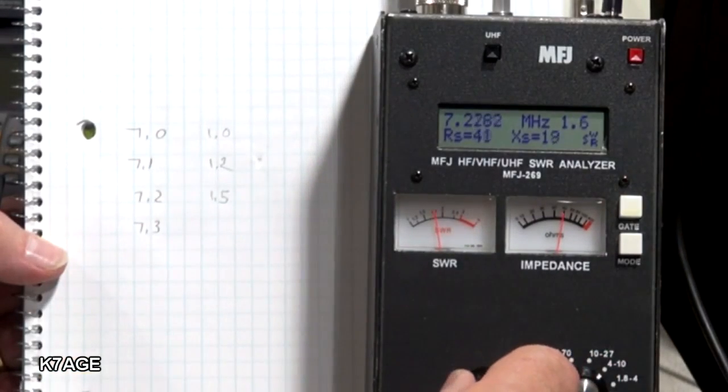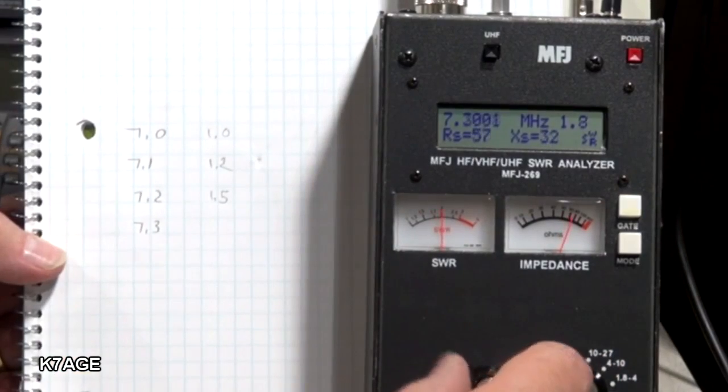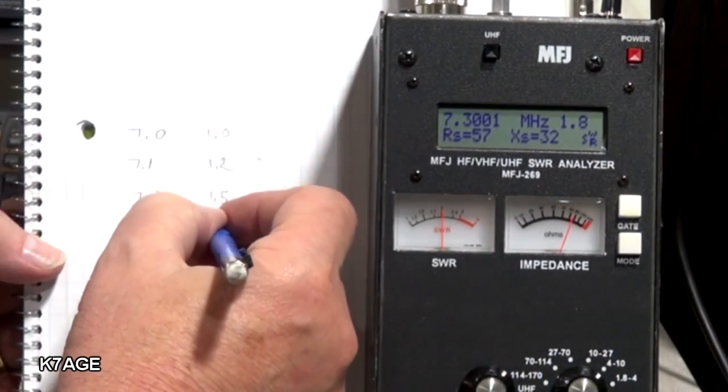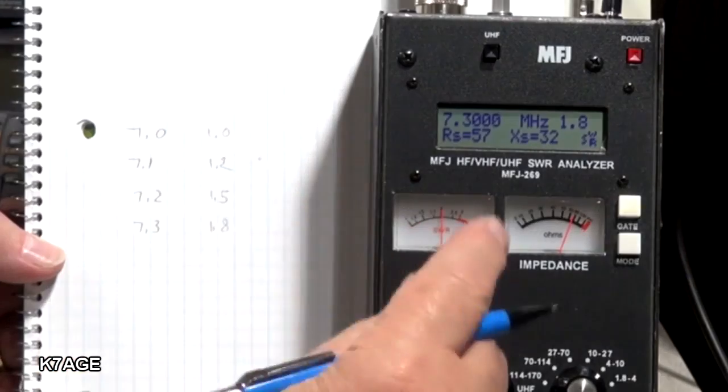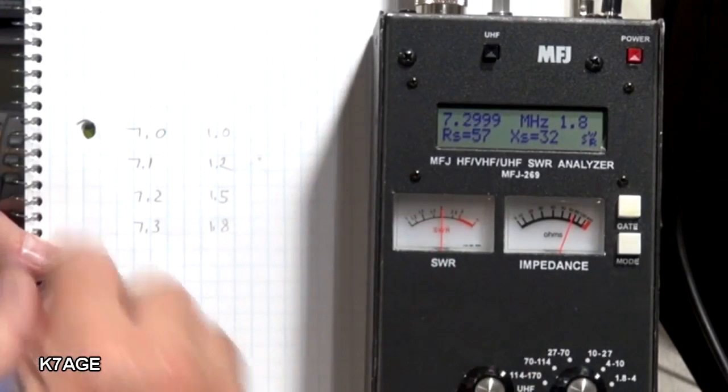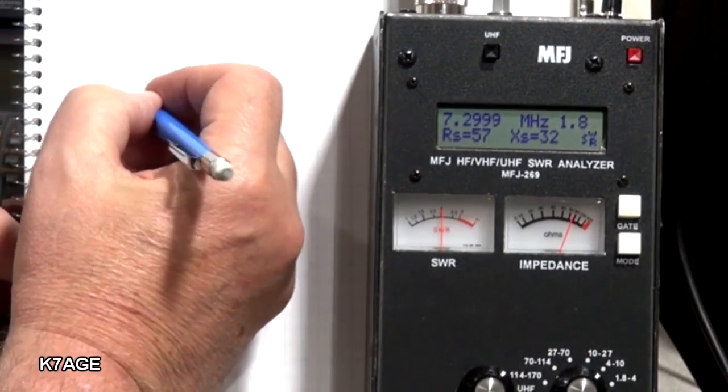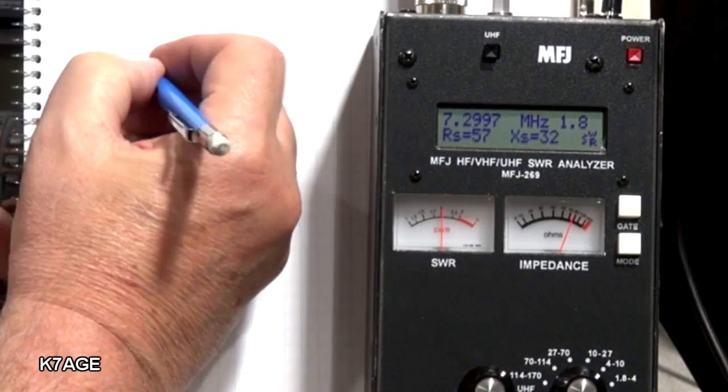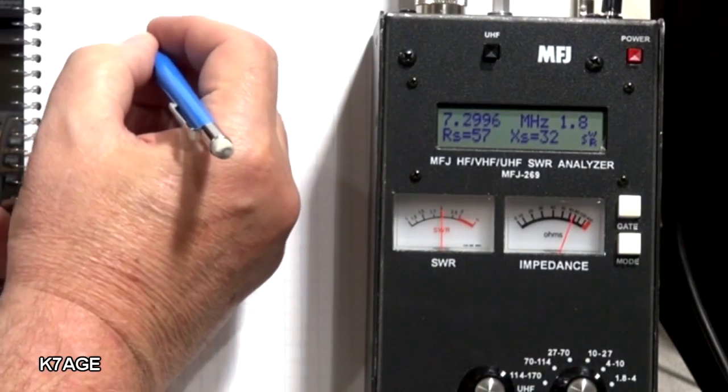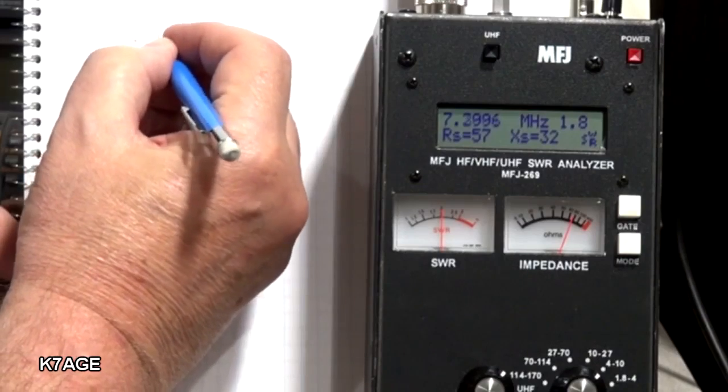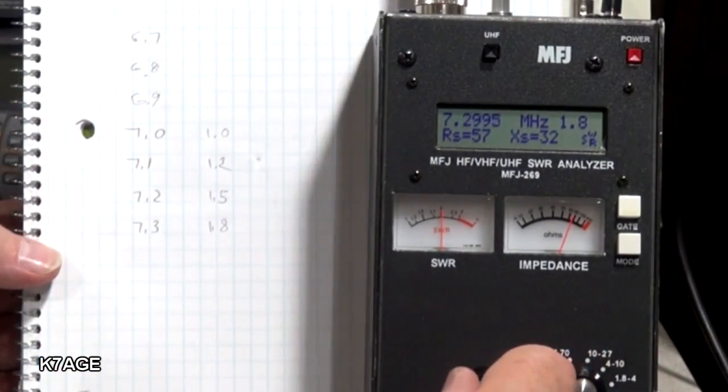I go up to 7.3. And it's 1.8. Now what's really nice with these. You can go outside of the amateur band. So let's just say go down here to 6.9. And 6.8. And 6.7 here. And see what my SWR is.